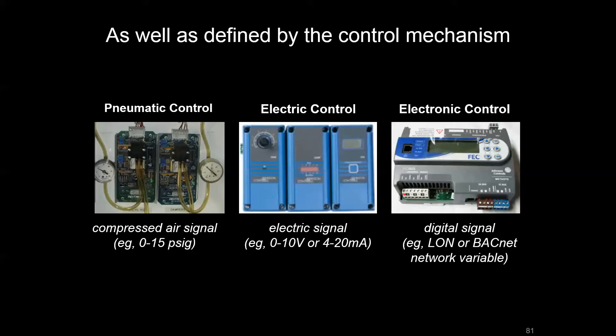We may also pay attention to the control infrastructure meant to address the control objective. In older systems, something like pneumatic control uses compressed air running through tubing around the buildings as a modulating signal to things like control valves and dampers, with receiver controllers. With electric control, we're replacing that pneumatic signal with an electric one — either 0 to 10 volt or 4 to 20 milliamp — for input/output going to and from the control equipment.